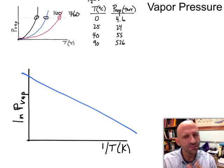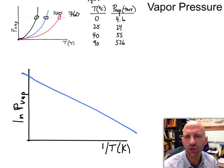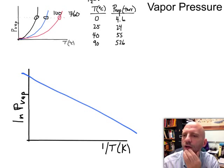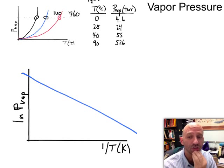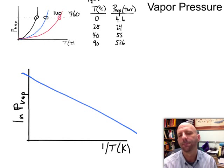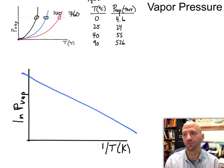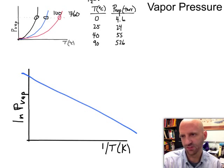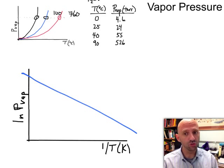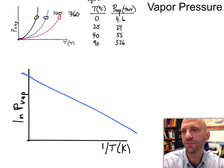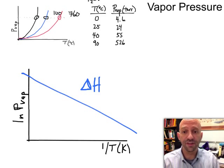It turns out that if you graph the natural log of the vapor pressures versus the reciprocal of temperature in Kelvin, you actually will get a straight line. Now we've kind of seen straight lines with natural logs before. Where have we seen straight lines with respect to natural logs before? You think about that.